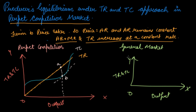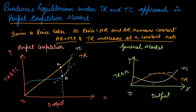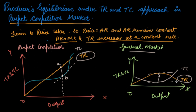In the general market, the shape of TR was a curve like this, and the shape of TC is similar in both cases. You draw tangents, and the maximum profit is where TR and TC are parallel. The key difference is: in perfect competition your TR curve is a straight line, while in the general market your TR curve is a curved shape.